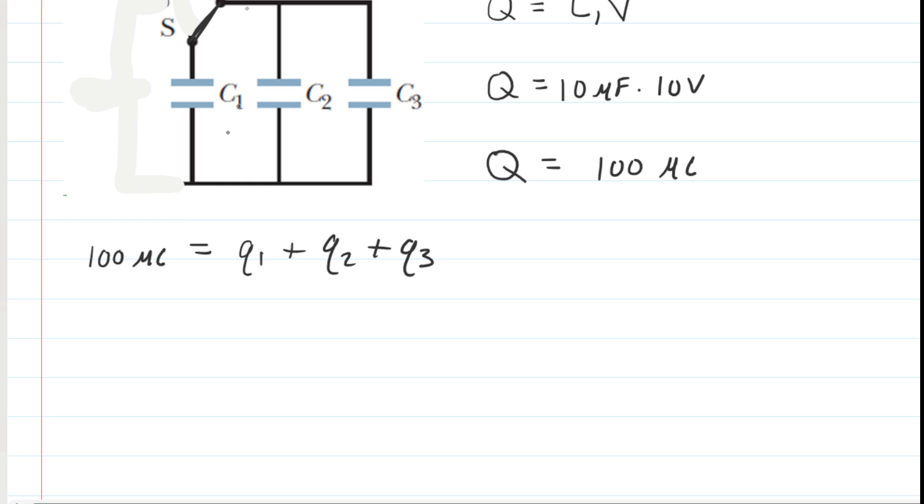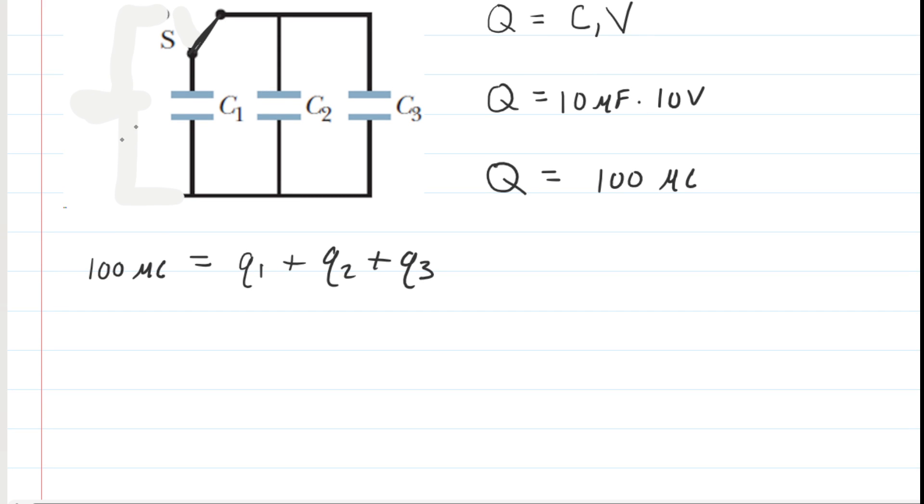That's great. But what else is true about this arrangement of capacitors? Well, they are arranged in parallel with each other. And perhaps you've learned in this chapter that when you have parallel capacitors, the potential difference across the plates of each capacitor is the same. So what we could say is that V1 equals V2, which equals V3.